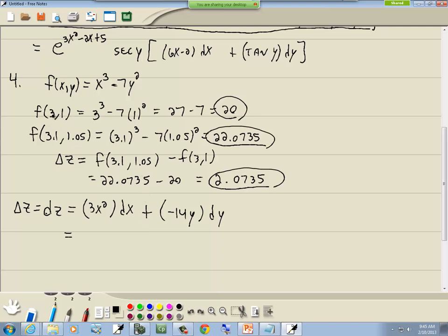Now the x and y we're going to be putting in is our beginning one, the 3 and 1. So we're going to have 3 times 3 squared times dx. This is the change in x from 3 to 3.1, which was 0.1. Plus negative 14 times y, which was 1, then the change in y from 1 to 1.05, so that's 0.05.